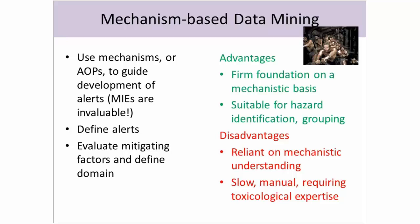The advantages of this approach are that you now have a firm foundation in mechanisms. You end up defining small areas of chemistry, but you have a good mechanistic rationale. That's good for hazard identification and, importantly, it's good for grouping. With grouping, you might actually be able to predict something and push towards understanding what's going on.